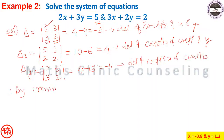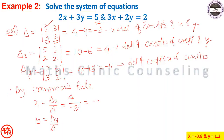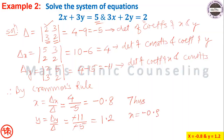By Cramer's rule: x equals delta_x divided by delta, which is 4 divided by minus 5, equal to minus 0.8. And y equals delta_y divided by delta, which is minus 11 divided by minus 5, equal to 2.2. Therefore x equals minus 0.8 and y equals 2.2 is the answer.